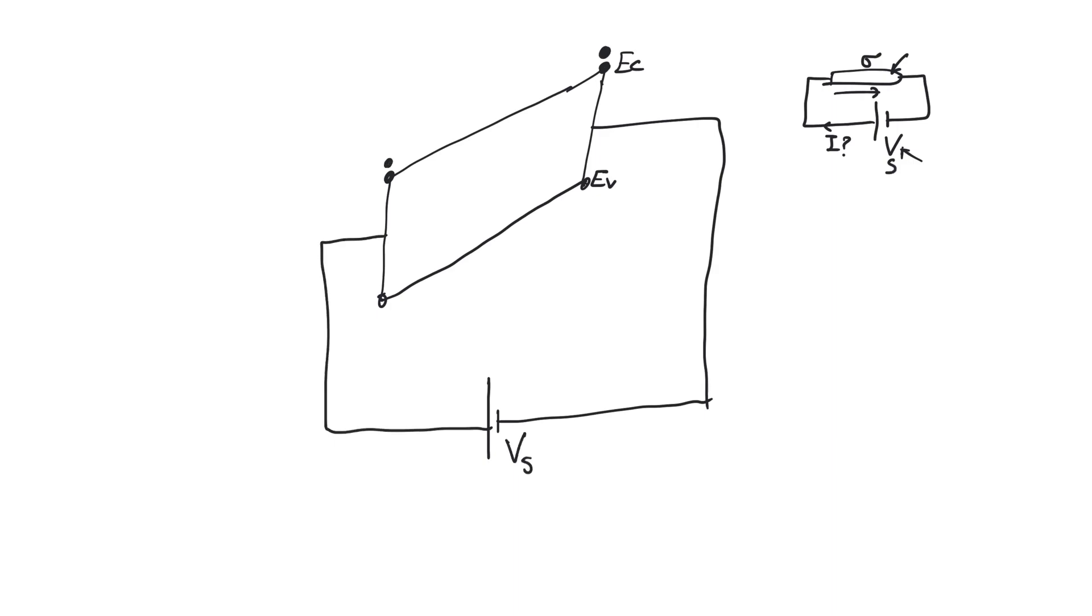Now there's something a little bit confusing here, which is that the negative potential side has a higher energy and the positive potential side has a lower energy. This is an unfortunate relic of the fact that potential is described for an imaginary positive charge carrier, whereas the real charge carriers are actually electrons.